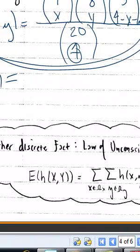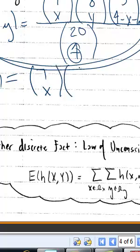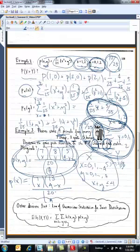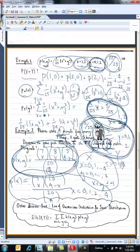This is gonna look like 7 choose x, 13 choose 4 minus x over 20 choose 4. And this is valid for x equals 0, 1, 2 up to 4. Same way for y. Instead of taking this and summing over my x's or my y's to get the marginals, I can kind of see already what the marginals are.